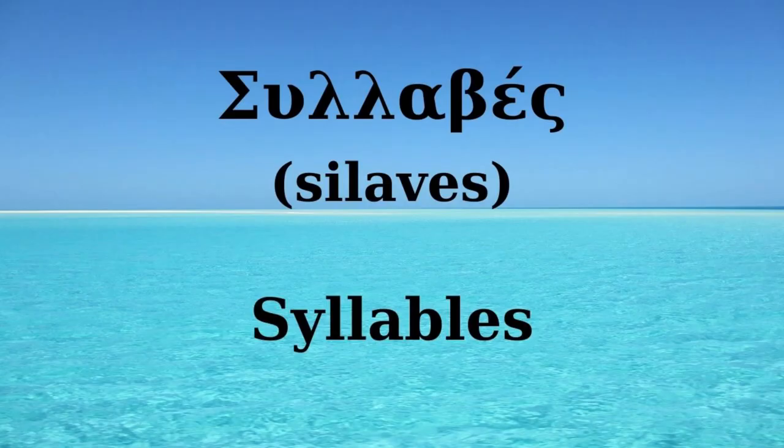Each word is divided into smaller parts called syllables. A syllable consists of one or more consonants together with a vowel or diphthong, or has only one vowel or diphthong. Let's see the paradigm.